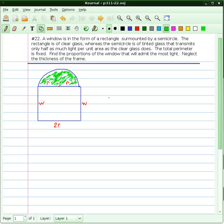The total perimeter is fixed. Find the proportions of the window that will admit the most light, neglect the thickness of the frame. As you can see, I've tried to draw this. I've indicated with the green that this upper window only emits half the light the bottom one does, the clear glass.